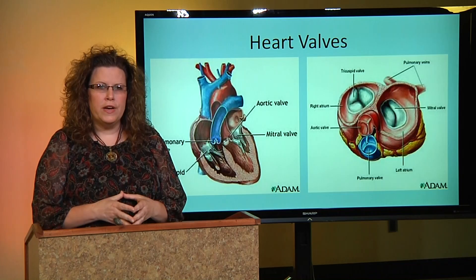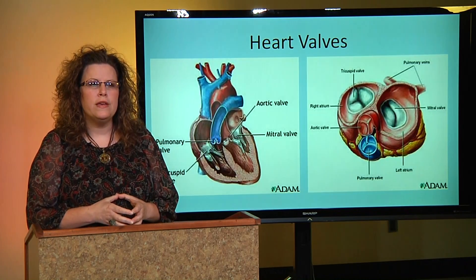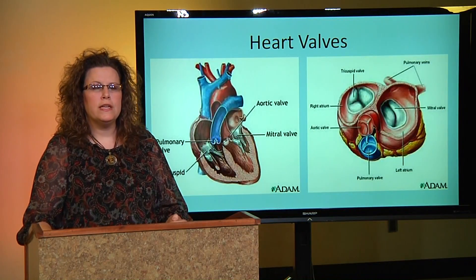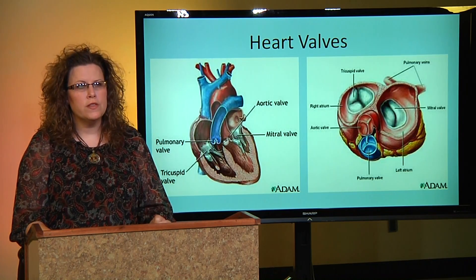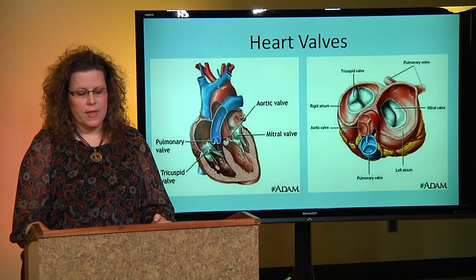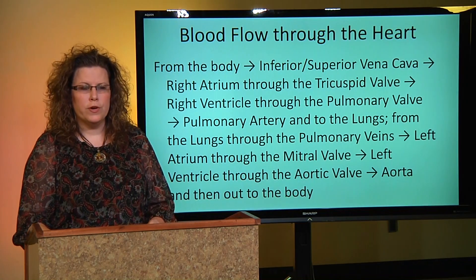The semilunar valves — the pulmonary valve and the aortic valve — help to keep blood from coming back into the ventricle after they have closed. They open during ventricular contraction and close during relaxation. Now that we've talked about the different anatomy of the heart, the different chambers, and the different valves, let's look at the blood flow through the heart.